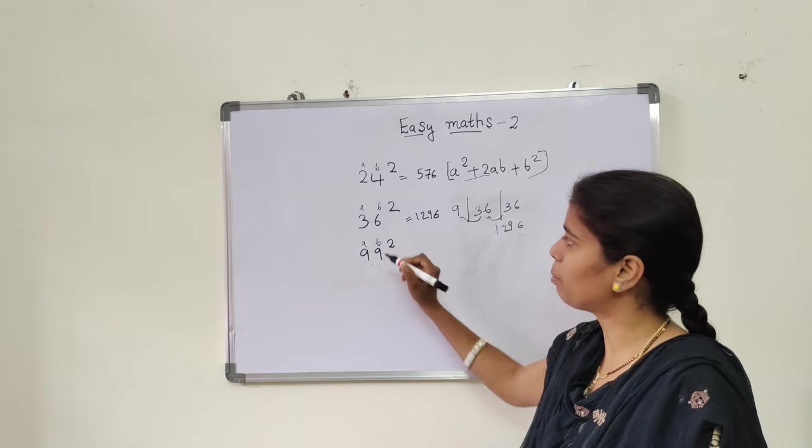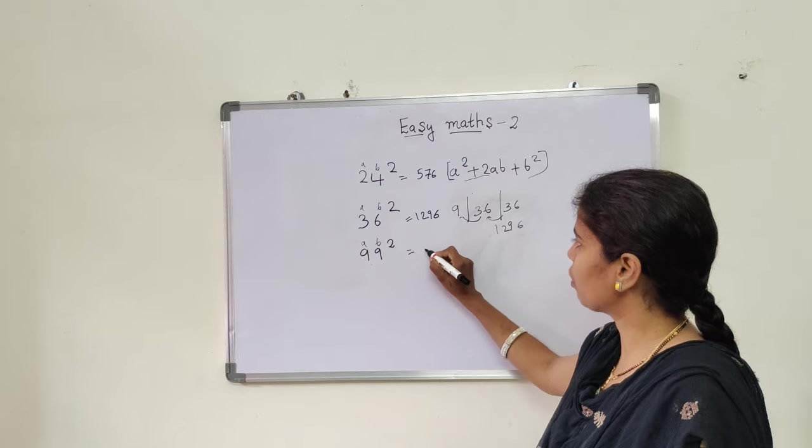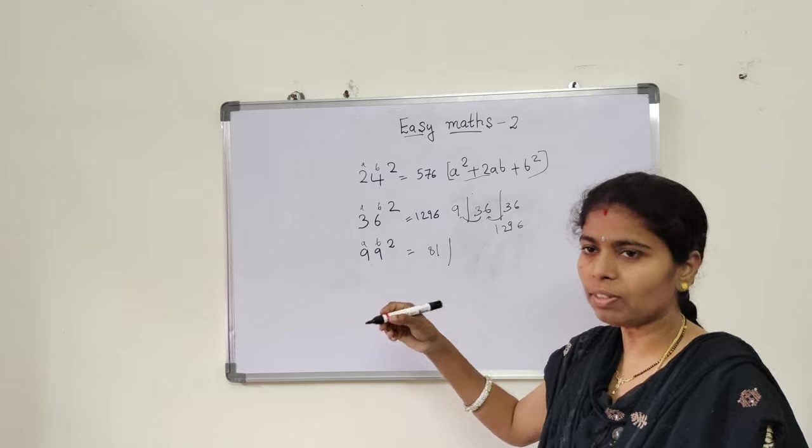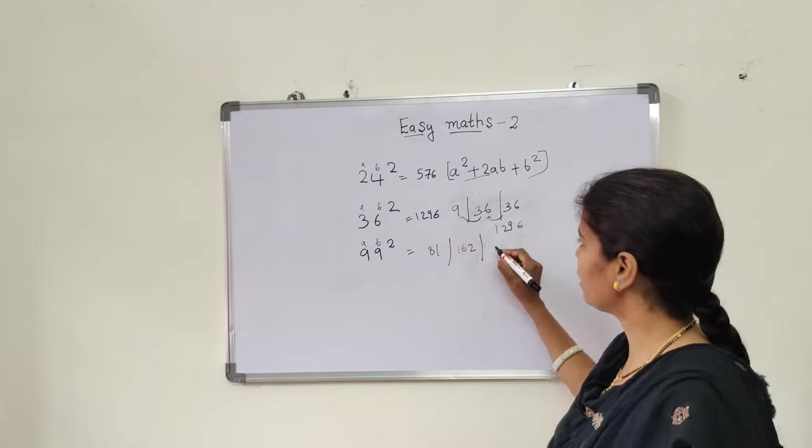See, same thing. A and B here. Now, simple. 9 square, that is 9 × 9 is 81. 9 × 9 is 81. 81 × 2 is 162. 9 × 9 is 81.